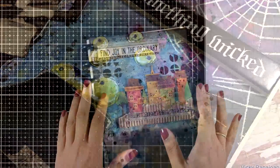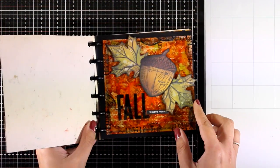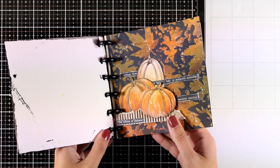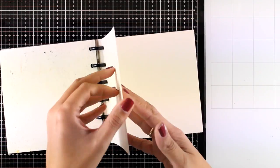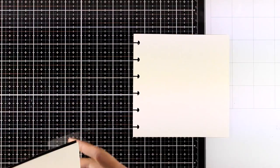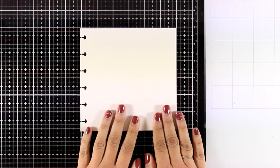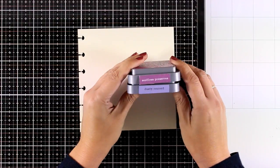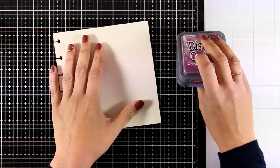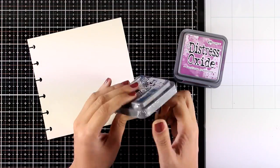So I will be working on my custom made 6x6 disc bound journal. This is made out of mixed media paper by Ranger and you can see all the pages here which I have shared as video tutorials on my channel. So let's grab one of the pages and let's play with my Distress Oxide inks.